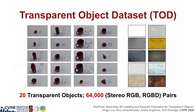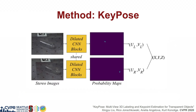As a result, we build the first large-scale transparent object pose estimation dataset. We propose a deep neural network to predict 3D keypoints from stereo images by predicting keypoint heat maps.